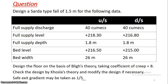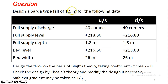Full supply discharge is 40 cumecs — that is the constant discharge. Full supply level: upstream FSL is 218.3 m and downstream FSL is 216.8 m. Full supply depth is common at 1.8 meters. Bed level is 216.5 m upstream and 215.0 m downstream — the difference is 1.5 meters. Bed width is 26 meters, common to both sides.